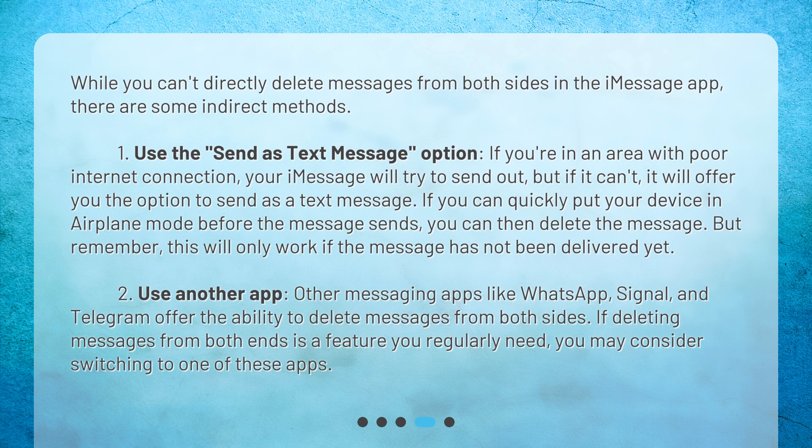If you're in an area with poor internet connection, your iMessage will try to send, but if it can't, it will offer you the option to send as a text message. If you can quickly put your device in airplane mode before the message sends, you can then delete the message. But remember, this will only work if the message has not been delivered yet.